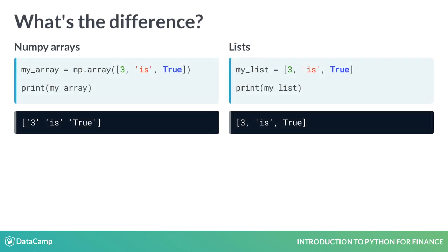Arrays are different from lists because they can contain only a single data type. If you do create a numpy array with different data types, as shown here, numpy will automatically convert all the elements to the most compatible type. In this case, all the elements are converted to a string.